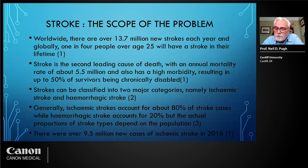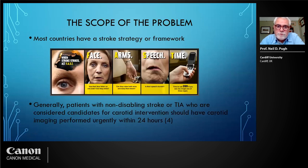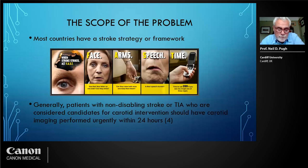Looking at ischemic strokes, which is what we're interested in terms of carotid artery disease, there were over 9.5 million new cases in 2016 — so you can see the scope of the problem is enormous. Most countries will have some form of stroke strategy. In the UK, we have the FAST awareness campaign: if there are any symptoms of stroke in the face, arms, or speech, then time is critical and we need to get the patient assessed in a timely fashion.